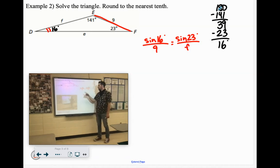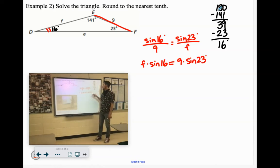If we cross multiply, we'd have F times sine of 16 equals 9 times sine of 23, and then we'll divide by the sine of 16 degrees.